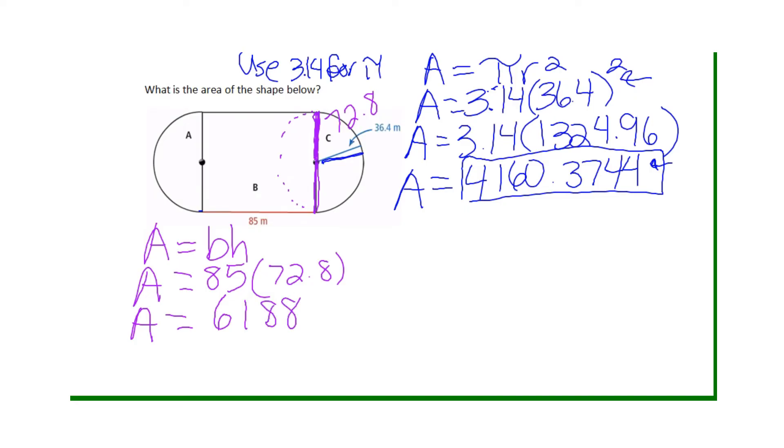Now these are both in meters. So I found the area of the rectangle, and then I found the area of the circle. The two semicircles put together makes one complete circle. So I found the area of those two. Now to figure out the area of the complete shape, I have to add the two.